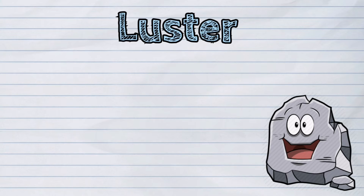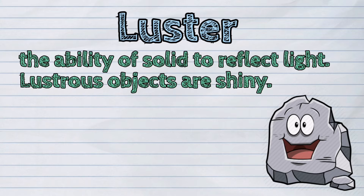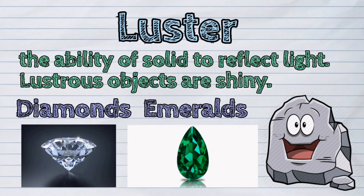The next one is luster. It is the ability of a solid to reflect light. Lustrous objects are shiny. Gemstones, such as diamonds and emeralds, exhibit this kind of property.